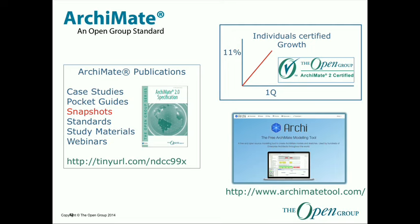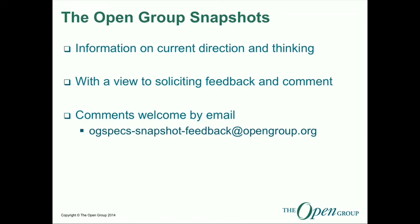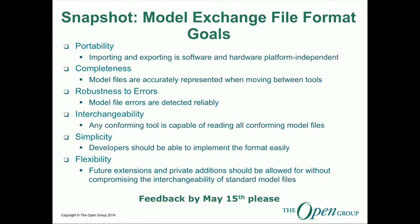If you go to the URL for publications at the bottom, you can get all of those things. I've highlighted the snapshots because I want to talk about them — I think people don't really understand why we do them. And there's a link to Archi, which is the open-source free tool I use for Archimate. Snapshots are not a standard; they are information put out publicly to enable people to provide feedback on those standards.